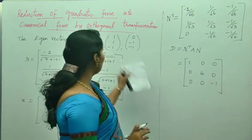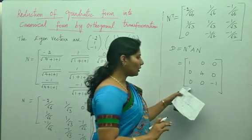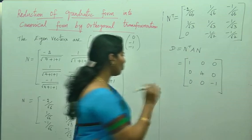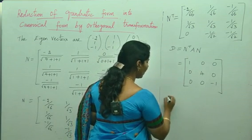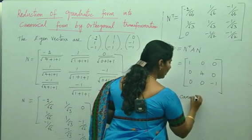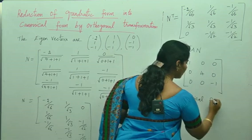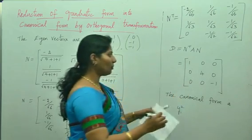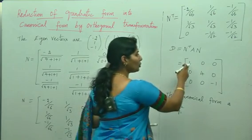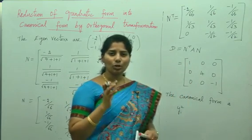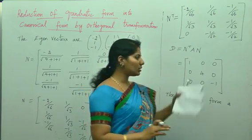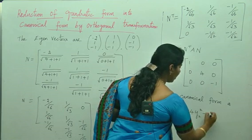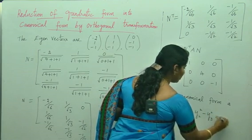They will also ask you to discuss the nature of the roots. After getting the diagonal matrix, you must write the canonical form. For 1 mark, write the canonical form as: y1 squared plus 4y2 squared minus y3 squared equals 0 — where only square terms appear. This is the definition of canonical form: the number of square terms.